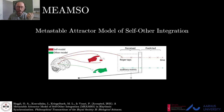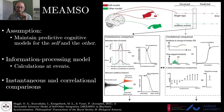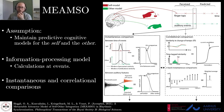Our attempt at that is what we call MEANSO, short for the Meta-stable Attraction model of Self-other integration, and it is due to come out in Phil Trans B soon. The foundational assumption of MEANSO is that we maintain predictive cognitive models for the self and the other — meaning for what you yourself are doing and for what you think the other person is doing. It is an information processing model where calculations are performed at events, and the two main modules are one performing instantaneous comparisons and another performing correlational comparisons.